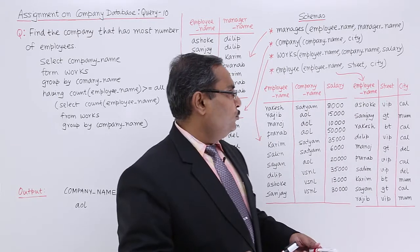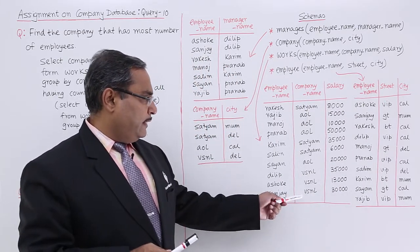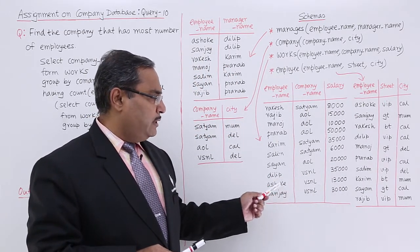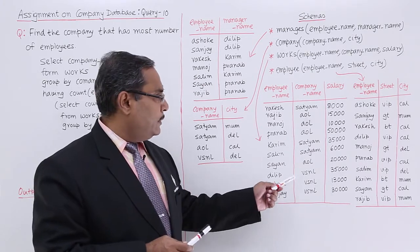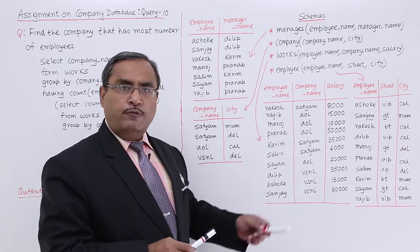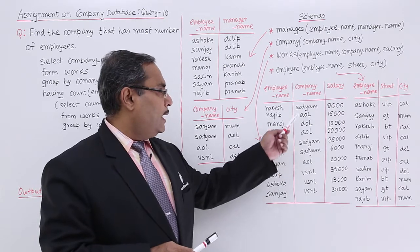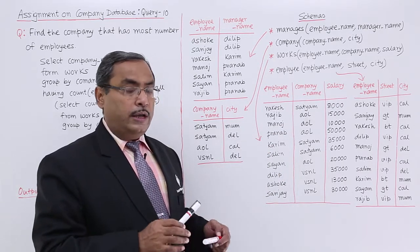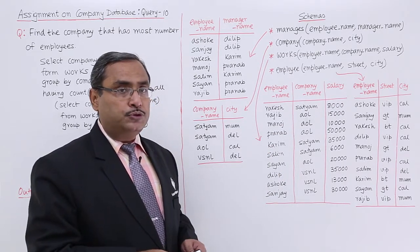If you come to this works table, you can find that VSNL has 3 employees, AOL has 4 employees, and Shottam has 3 employees. So AOL should be coming as the output.